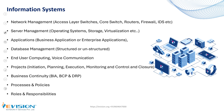What is an information system? An information system is a combination of network management — including various devices — server management, operating system, storage virtualization, application management, database management, end-user computing, and voice communication. Additional components include projects, business continuity, process and policy, and roles and responsibilities. Management systems are the interrelated activities of your information systems together with projects, business continuity, processes, and roles and responsibilities being performed in an organization.